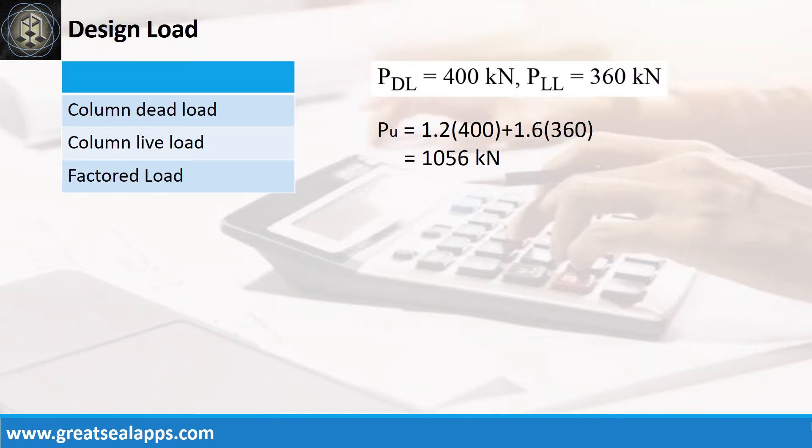The footing carries an axial dead load of 400 kN and axial live load of 360 kN for a factored axial load of 1056 kN.